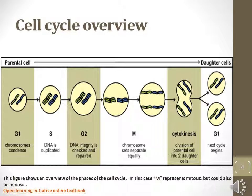Next, either mitosis or meiosis, two different types of cell division, will produce daughter cells. Mitosis results in two diploid daughter cells that contain two pairs of homologous chromosomes, abbreviated as 2N, diploid. Meiosis results in four haploid cells that contain a single set of each chromosome, abbreviated as N. After genetic material is separated, the cytoplasm is then divided among daughter cells in an event known as cytokinesis. The cell cycle is then complete.